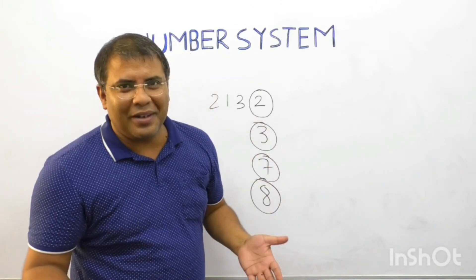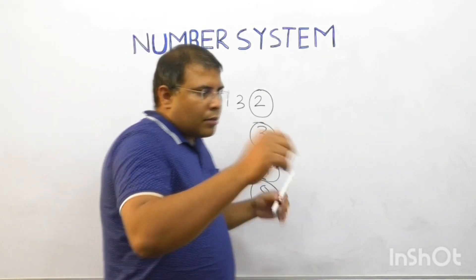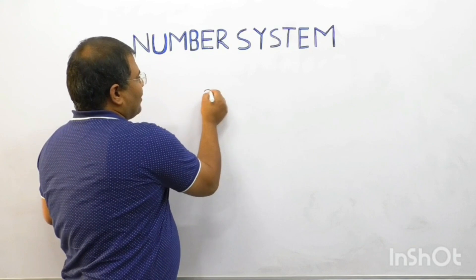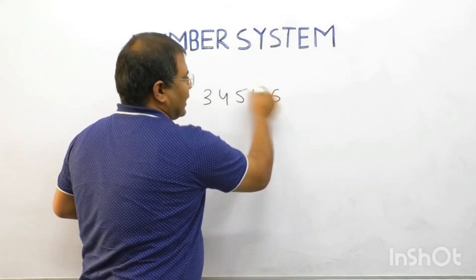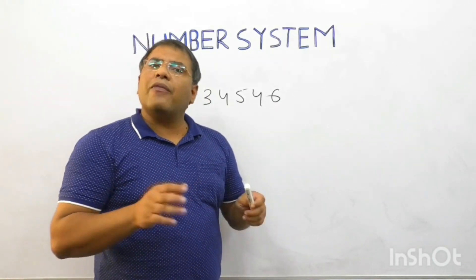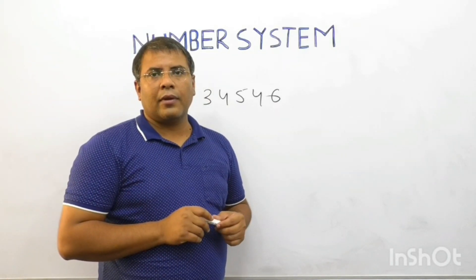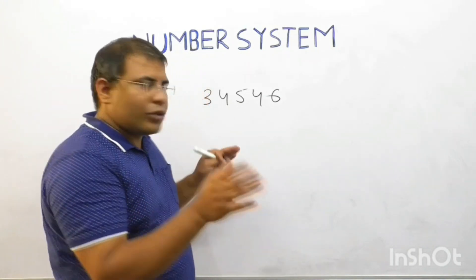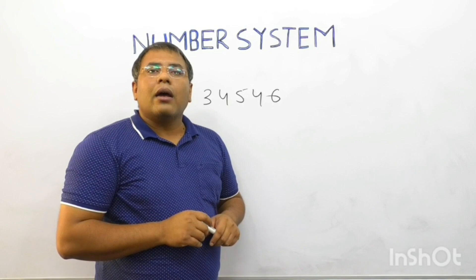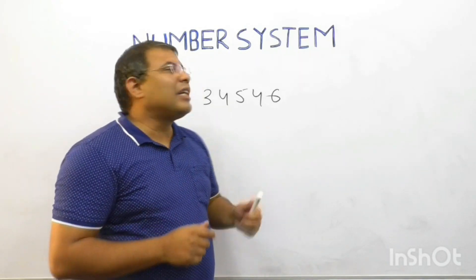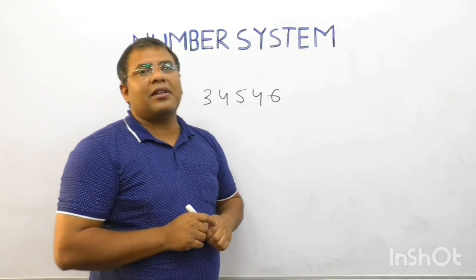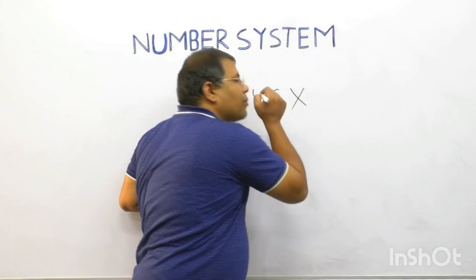Taking another example: is 34546 a perfect square? Some of you may say it may be, some may say it may not be — but my answer is it's never going to be a perfect square.